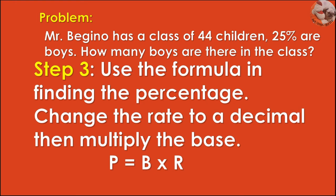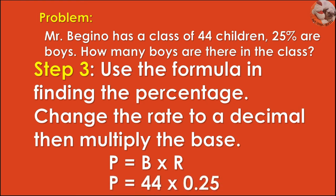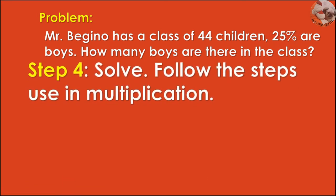P is equal to B times R. So P is equal to 44 times 0.25. Why 0.25? Because this is the decimal form of 25%. Step 4: Solve, following the steps in multiplication. So 44 times 0.25.